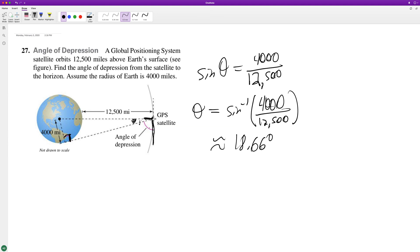And then, so we just take angle of depression, 90 minus 18.66, which is equal to 71.34 degrees.